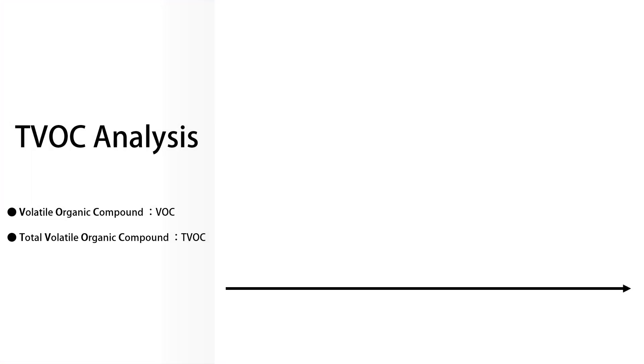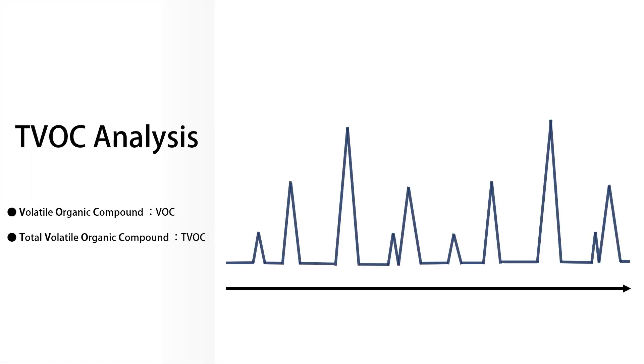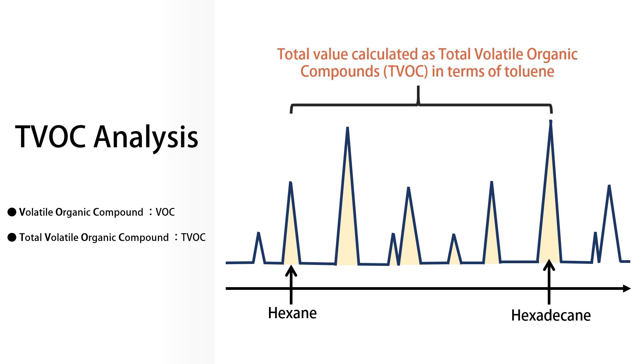A common monitoring method involves the measurement of all compounds eluting between hexane and hexadecane. The concentration of each compound is commonly calculated as a toluene equivalent, and the result will reflect total volatile organic compounds.